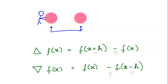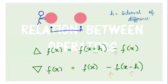Next come the two operators: the forward difference operator and the backward difference operator. The forward difference operator is denoted by delta, and the backward difference operator is denoted by nabla. Here, h is the interval of difference — that is, the constant difference between two consecutive values of x.